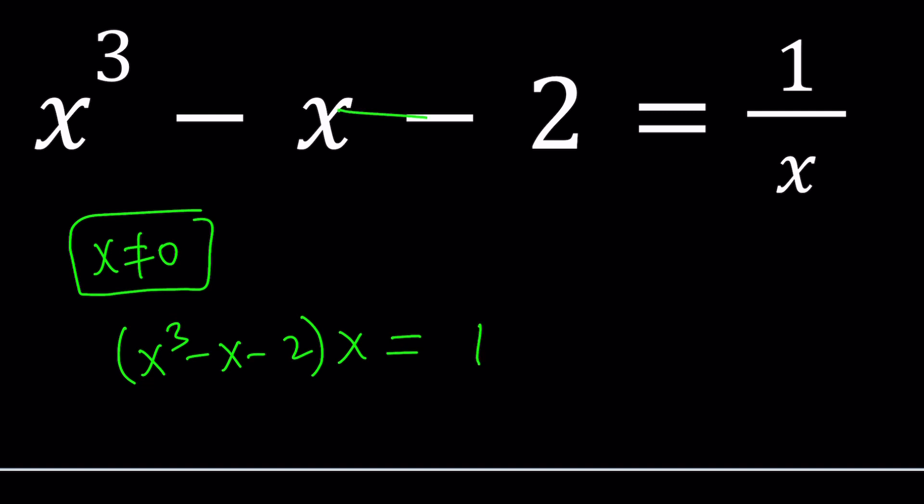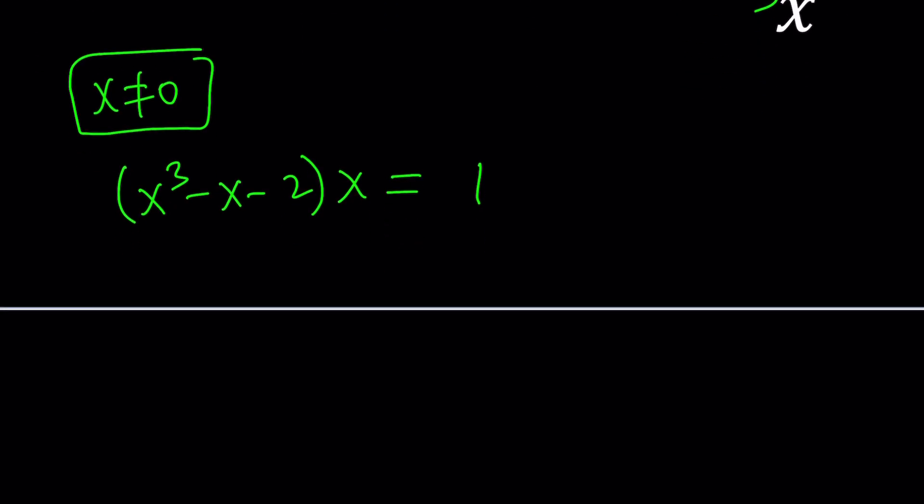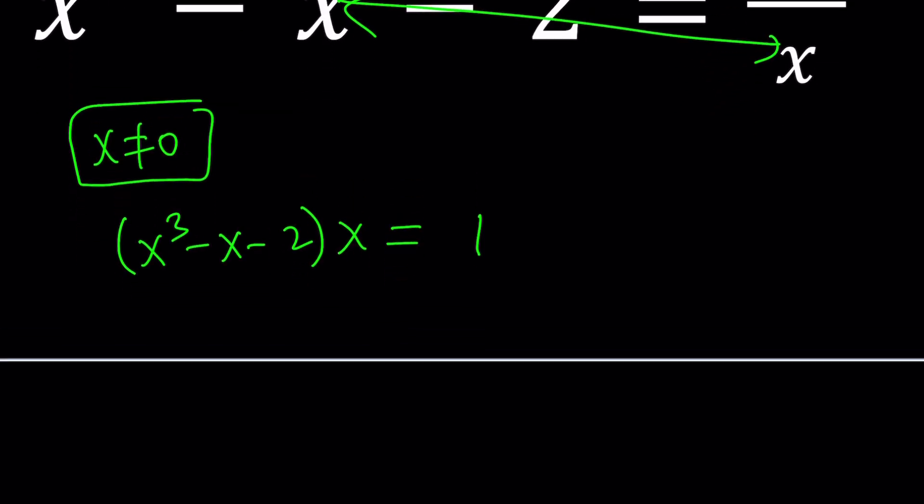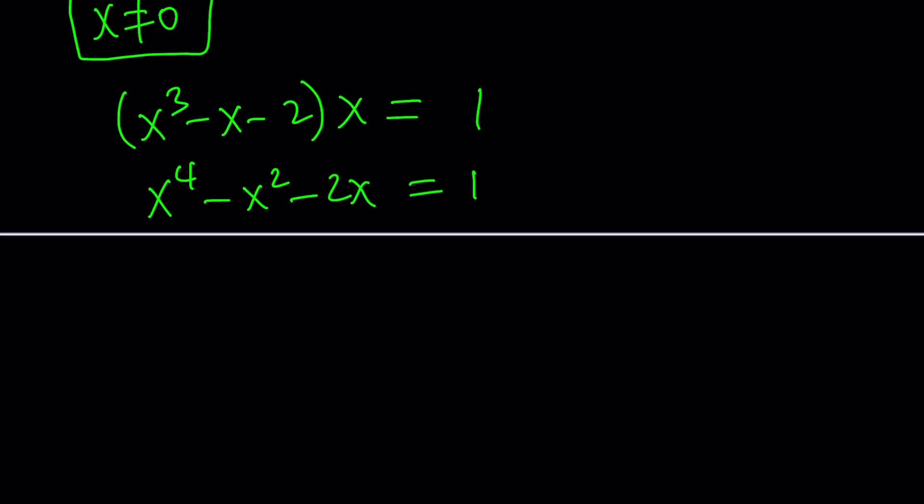We're going to multiply x cubed minus x minus 2 by x, and that's going to equal 1. In other words, we're multiplying both sides by x. When you distribute the x, you get x to the fourth minus x squared minus 2x equals 1. If you put everything on the same side, you'll get a quartic. Even if you don't put everything on the left-hand side, you still have a quartic because the highest power is 4.